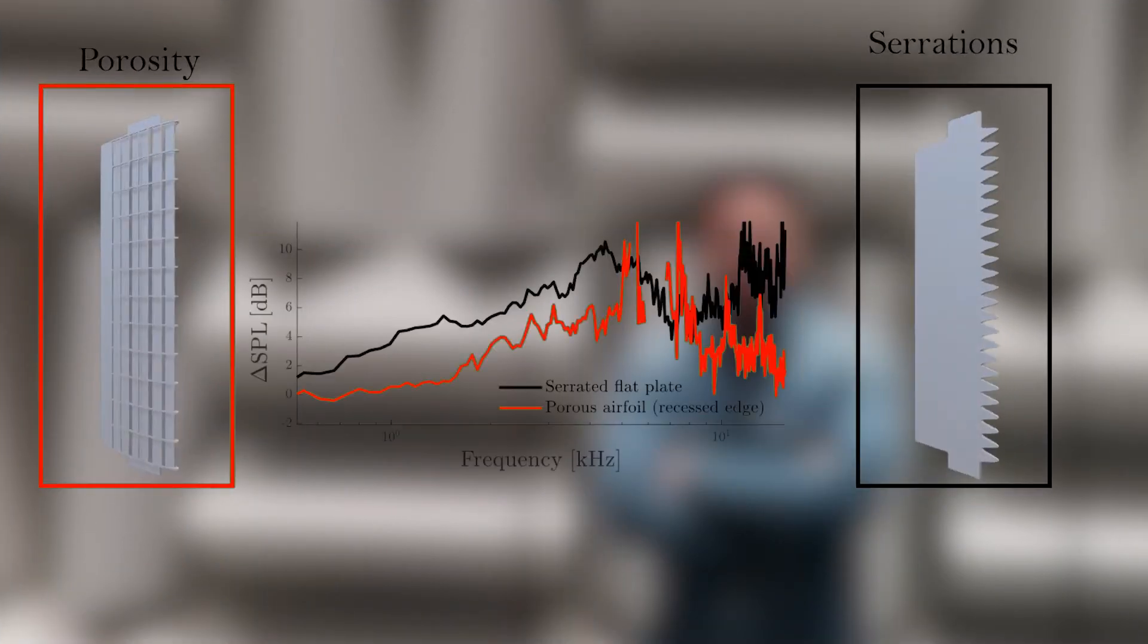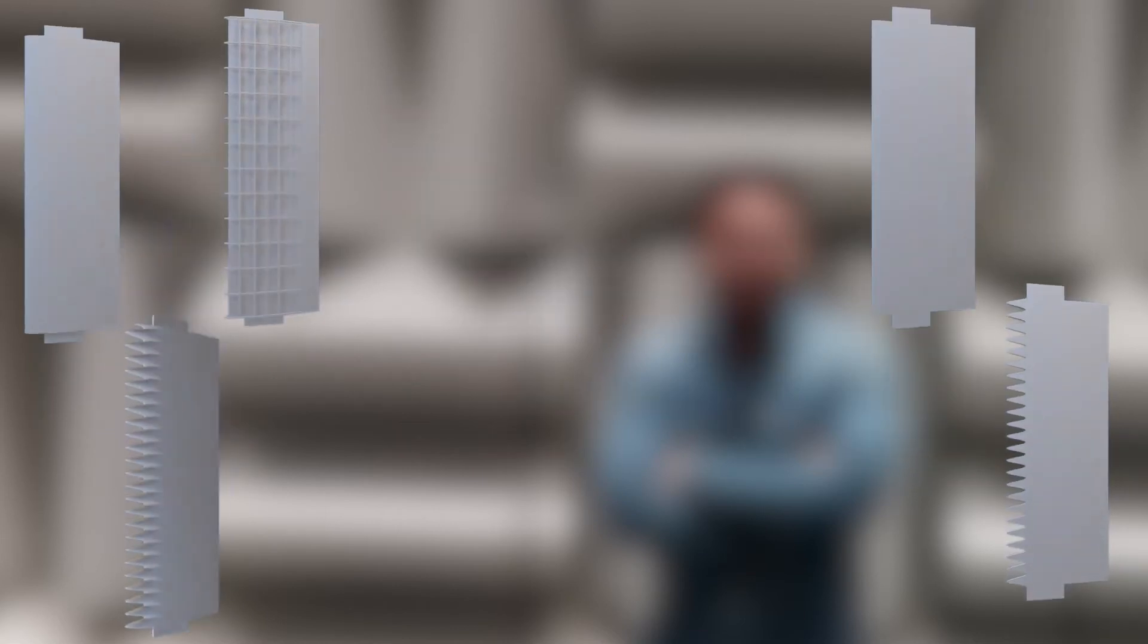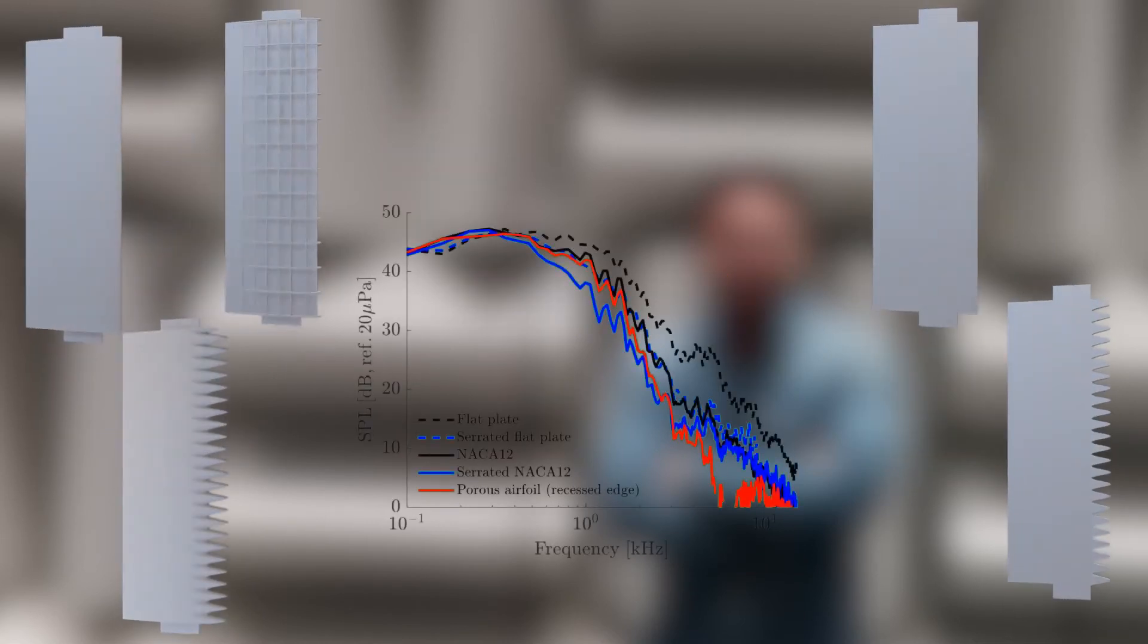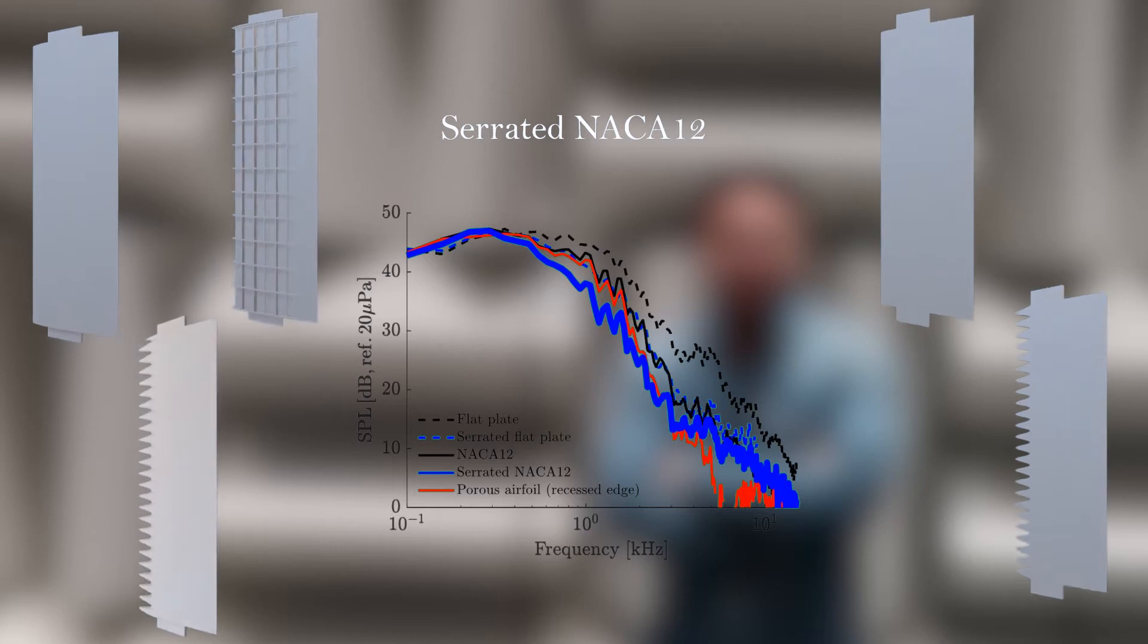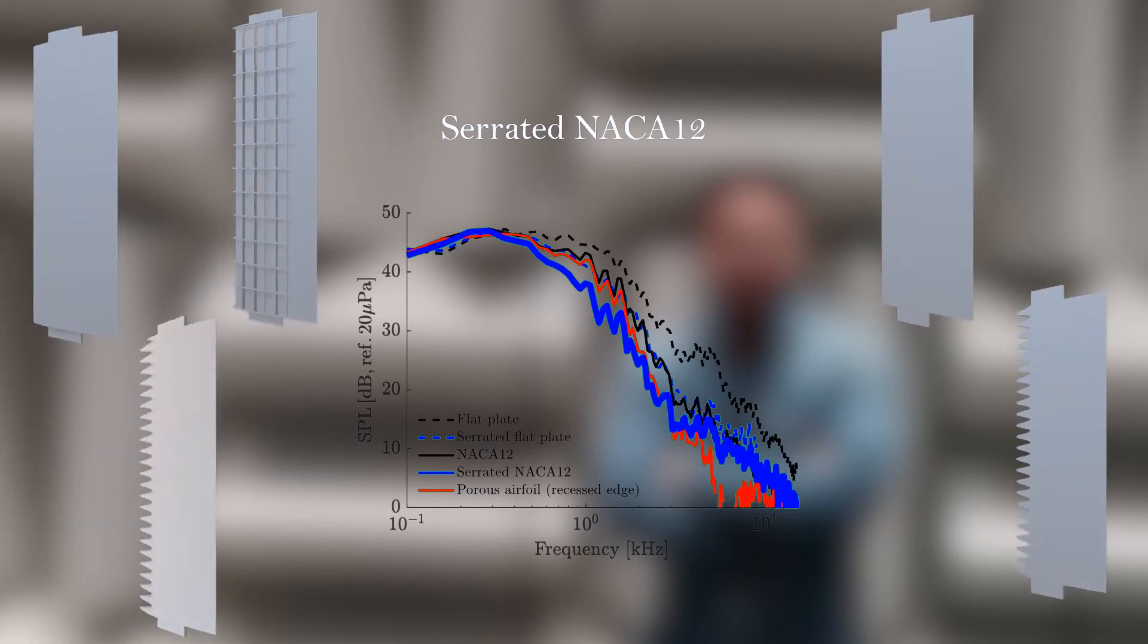Results have shown encouraging noise reduction performances for both technologies, while maximum noise reduction was obtained by the serrated flat plate. Nevertheless, according to the noise spectra plot, the quieter airfoil seemed to be the serrated airfoil where the thickness effect acts additionally to noise reduction efficiency.